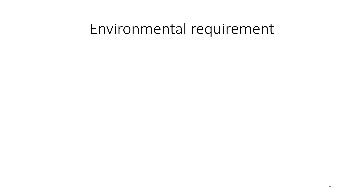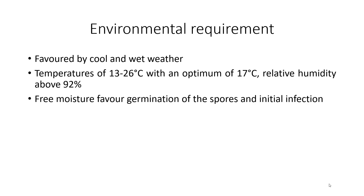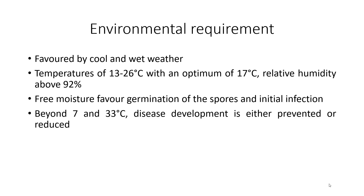Epidemiology of Bean Anthracnose — Environmental Requirement: The pathogen is favored by cool and wet weather conditions. Temperature ranges between 13 to 26 degrees Celsius with an optimum of 17 degrees Celsius. Relative humidity requirement is 92% or higher. Free moisture favors germination of the spores, initial infection, and also the spread of the pathogen. Below 7 degrees Celsius and above 33 degrees Celsius, disease development will not occur or is minimized.